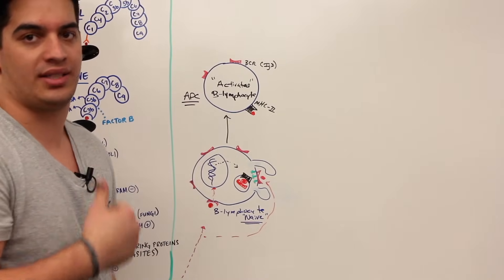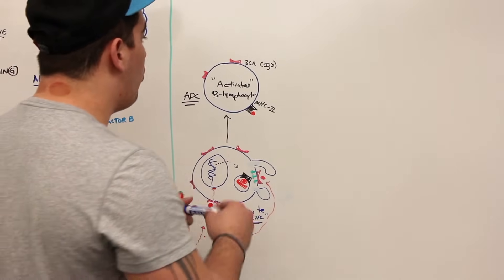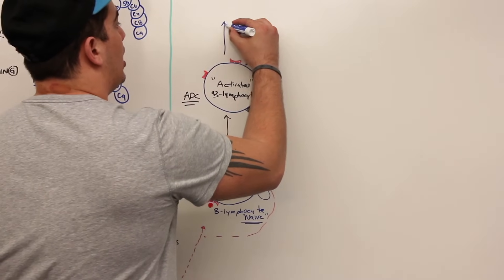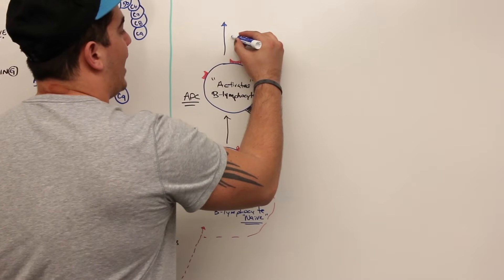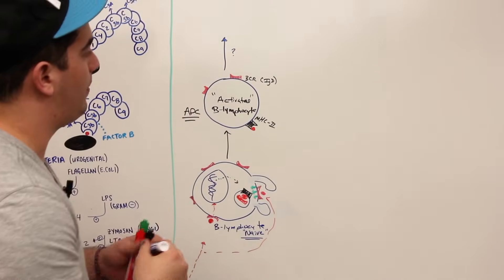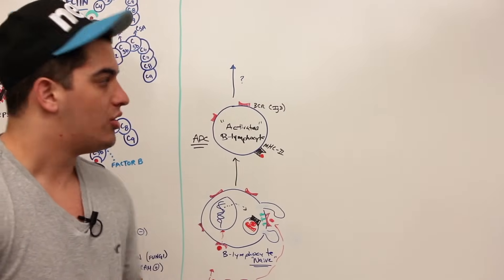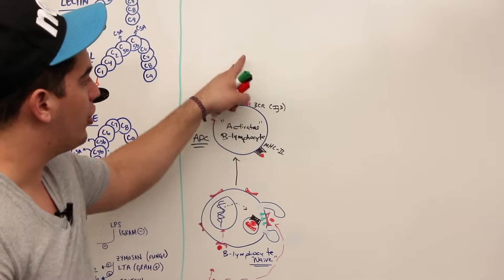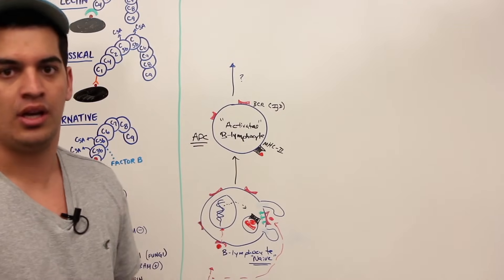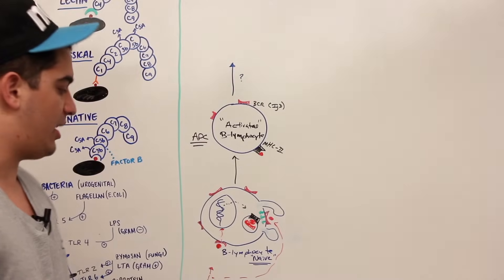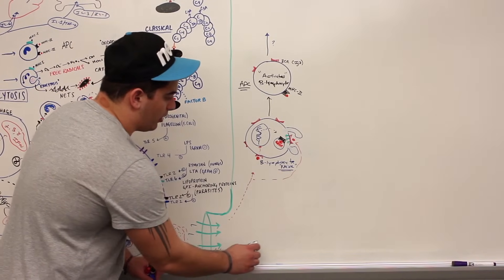So now this B cell wants to start proliferating, but we can't do that yet. Why not? This is where we need to talk about our macrophage. This step can't occur until we have some type of stimulus. Let's talk about what that stimulus is. The macrophage is coming over here.